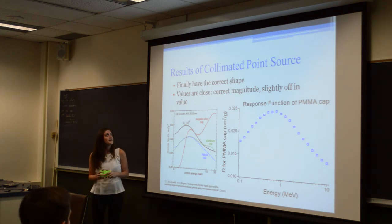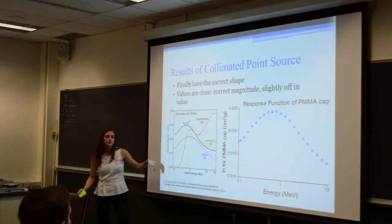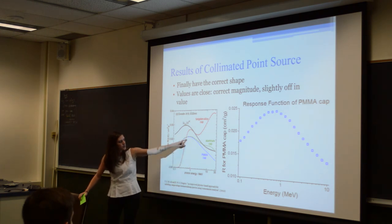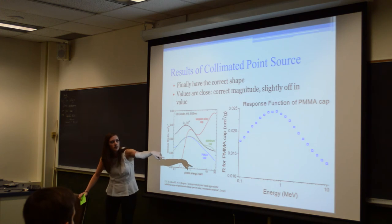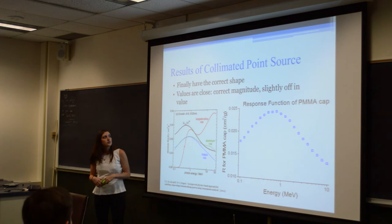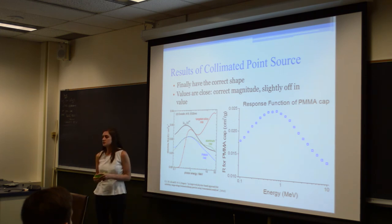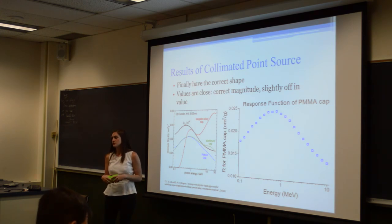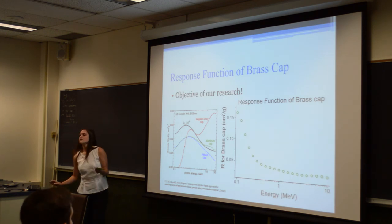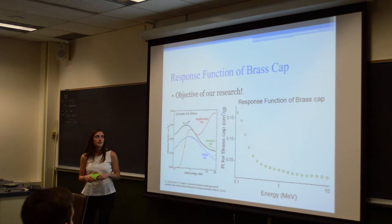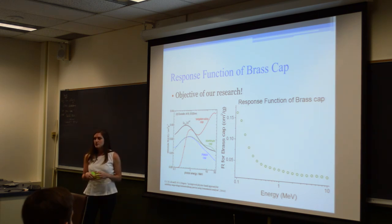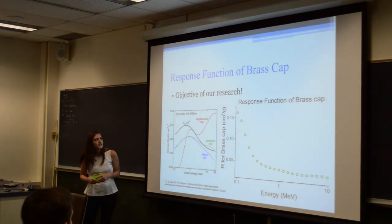These are the results we just got this weekend. The response function we got shows that the maximum is right before 1 MeV, just like the published one, and at 10 MeV it also goes down. They are also the correct magnitude, which was a big problem throughout the summer. The values are slightly off, but that's likely attributed to the difference in cap sizes and dimensions of the ion chamber. Since my objective was to get a response function for the brass cap, we had time on Saturday to create those input files, changing the material, density, and cap dimensions to match the exact dimensions that Demetra used in her experimental work. This is the response function we ended up getting — that was the objective of my research, so it's really exciting.